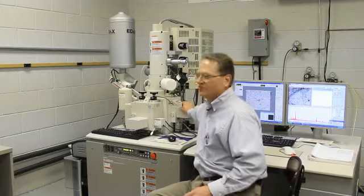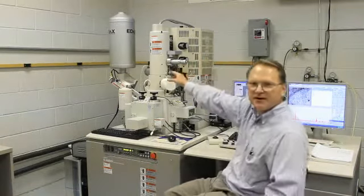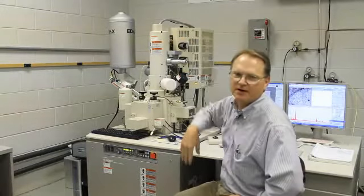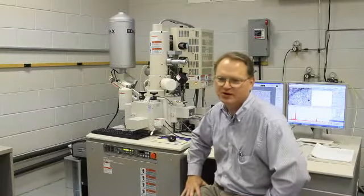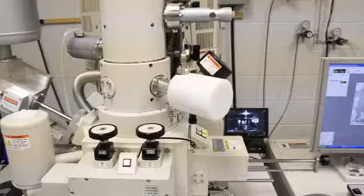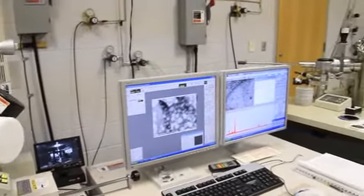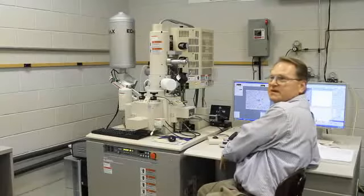Once it's injected into the chamber, then there is 30,000 volts that comes down and beams electrons onto the substrate and they bounce off and hit a detector. And you can start to see the topography of the sample that you put in there.